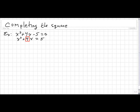So we get x² + 4x + (4/2)² equals 5. And remember the golden rule of mathematics.